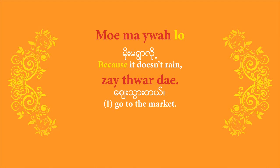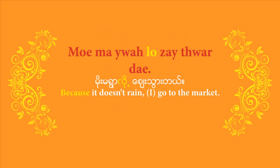One more time, a reminder. It's important to remember that you can't just put two sentences together with the word 'lo' in between. You have to turn the affirmative or negative sentence-end word into a 'because' word. So 'mo me joare bu lo ze thware de' would be incorrect. You have to say 'mo me joare lo ze thware de'.